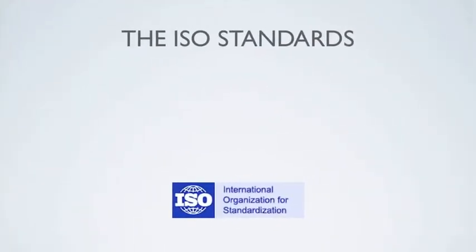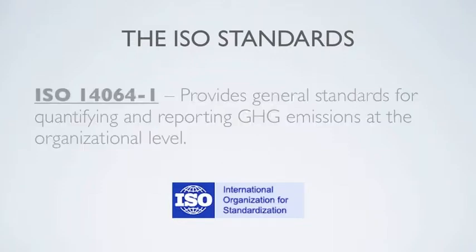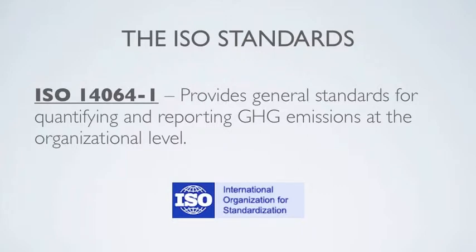ISO Standards. There are three international standards relevant to greenhouse gas accounting, known as the ISO 14064 standards, developed by the International Standards Organization. ISO 14064-1 is the standard for GHG accounting at the organizational level and is the standard relevant to this course. It includes requirements for determining inventory boundaries, quantifying emissions, and identifying specific actions or activities aimed at improving GHG management.